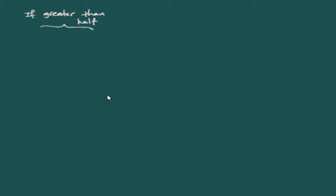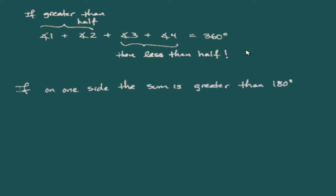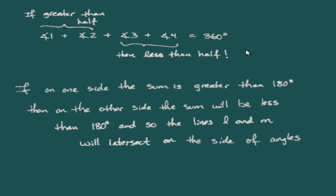Looking at that equation further: angle 1 + angle 2 + angle 3 + angle 4 = 360 degrees. If the first two sum to greater than 180, then the other two must sum to less than 180 degrees — less than half of 360. So if the sum on one side of the transversal is greater than 180, it forces the sum on the other side to be less than 180. The parallel postulate then tells us that lines L and M intersect on that other side, the same side as angle 3 and angle 4.